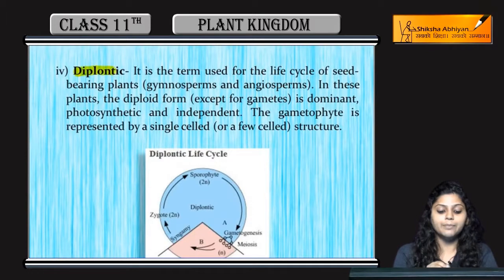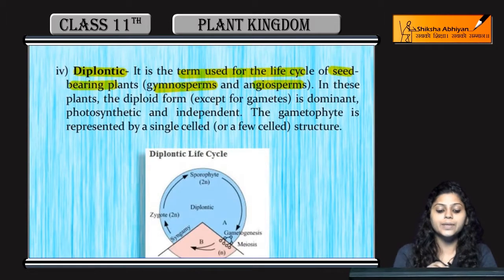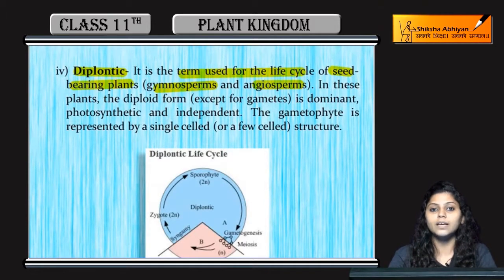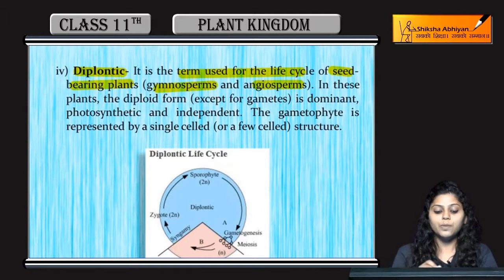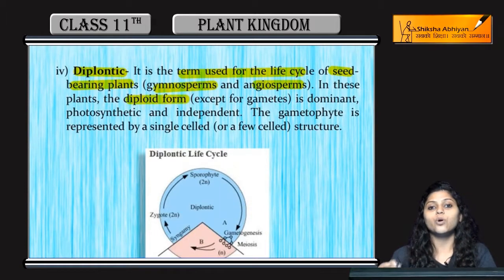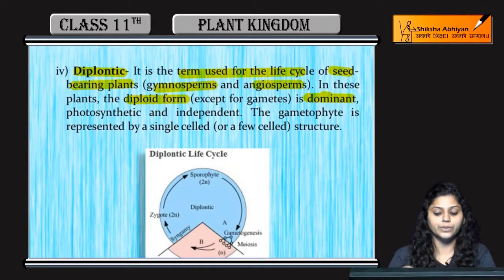Next, Diplontic. Diplontic is a term used for the life cycles of gymnosperms and angiosperms. Gymnosperms are seed-bearing, non-flowering plants, whereas angiosperms are flowering and seed-bearing plants. In this life cycle, the plants are diploid and dominant, while the gametes are haploid.